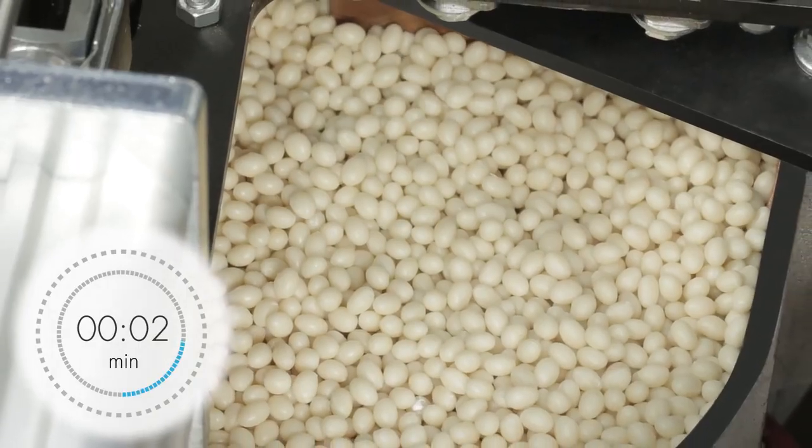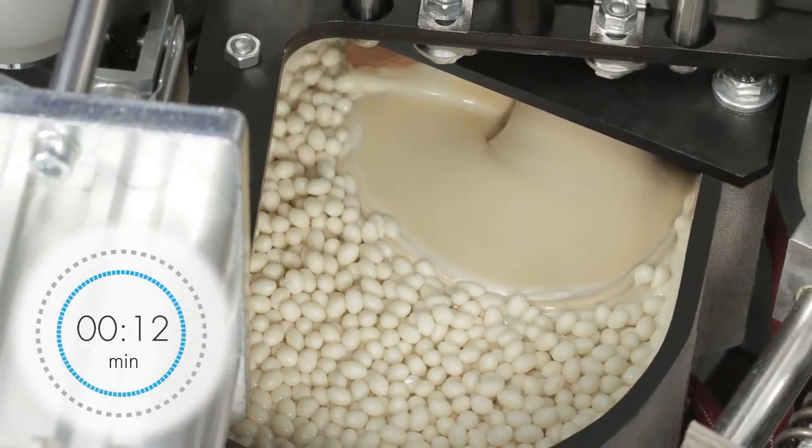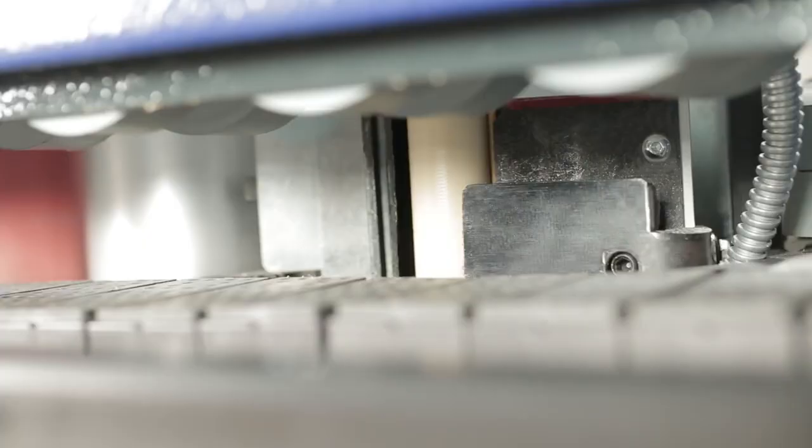The Teflon coated glue pot, suitable for EVA or PUR use, holds 1.2 kilograms (2.6 pounds) of glue, which corresponds to approximately 300 meters (985 feet) of edge.